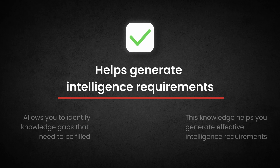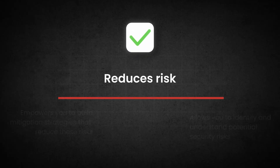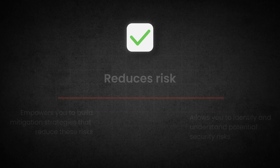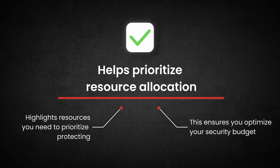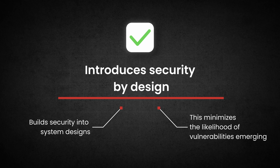Here are the key benefits threat modeling can provide. It helps generate intelligence requirements — it allows you to identify knowledge gaps that need to be filled, critical assets that need protection, and threats that need to be mitigated. Threat modeling also reduces risk by allowing you to identify and understand potential security risks threatening your systems, applications, or data, empowering you to implement mitigation strategies. It also allows you to prioritize resource allocation by highlighting resources you need to protect and where to invest your security resources. Threat modeling also introduces security by design into your architecture, minimizing vulnerabilities and the likelihood of critical vulnerabilities arising.